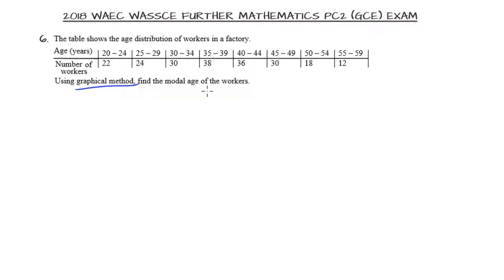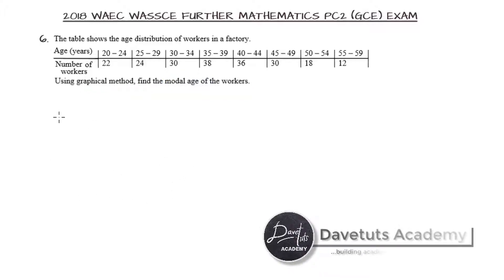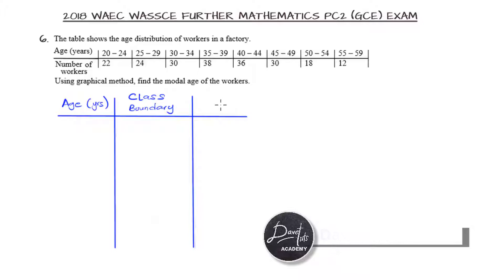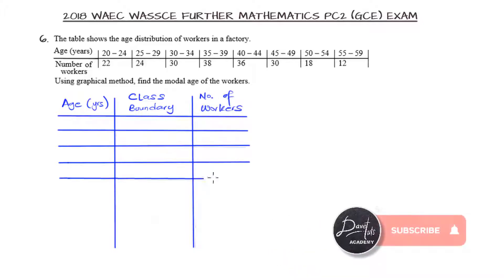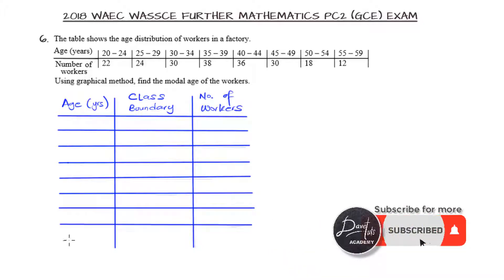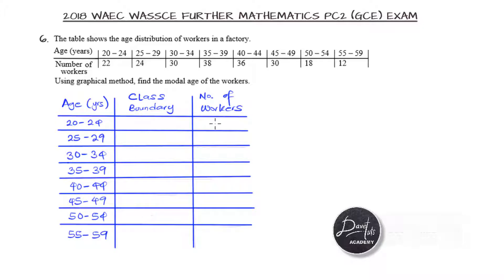In this question, we are asked to use the graph method to estimate the modal age of the workers whose statistics of age and the number of workers were given in the table as shown. This is telling us that we should draw our histogram and from the histogram estimate the mode, because the histogram is what we normally use to get the mode, and in this case we are getting the modal age of the workers.